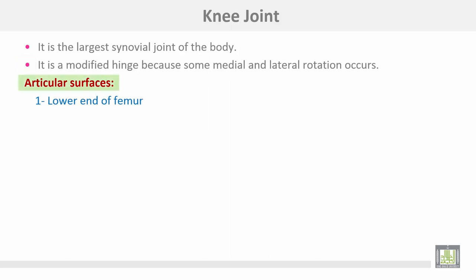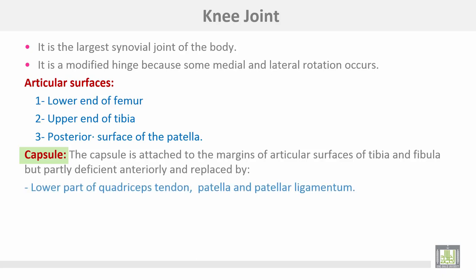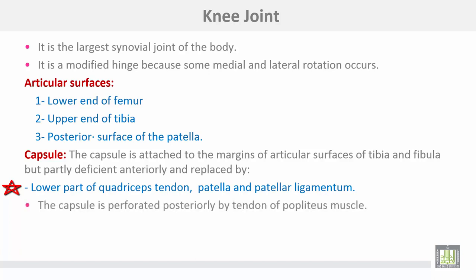The articular surface is at the lower end of the femur, the upper end of the tibia, and the posterior surface of the patella. The capsule of the joint is attached to the margins of the articular surface of the tibia and fibula, but partially deficient anteriorly and replaced by the lower part of the quadriceps tendon, patella, and patellar ligament. The capsule is perforated posteriorly by the tendon of the popliteus muscle.